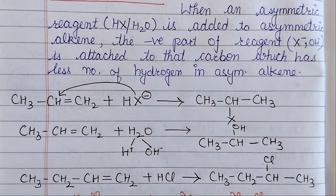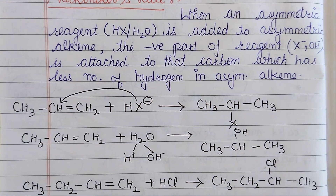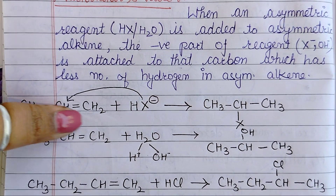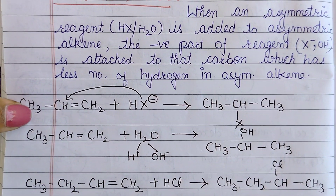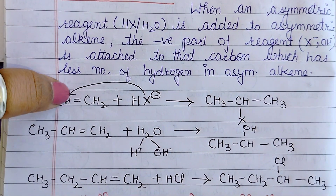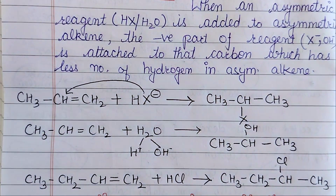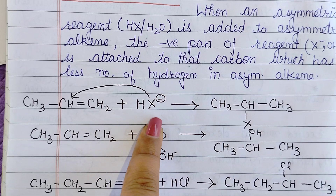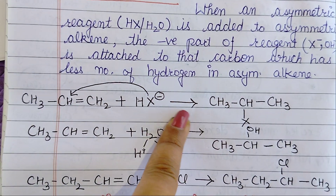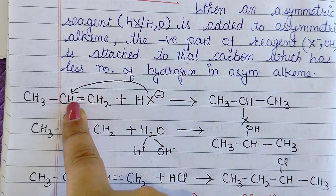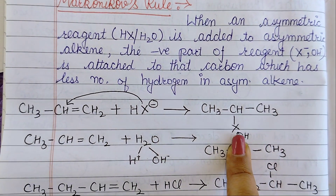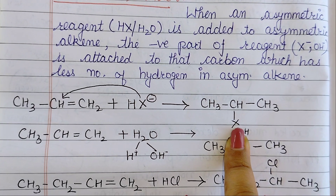Here is a basic trick. We take an asymmetric alkyne. Which carbon has the least number of hydrogens? It is CH. The negative part of the reagent will attack that carbon. When this carbon is attacked, the double bond is converted into a single bond, giving us the product.